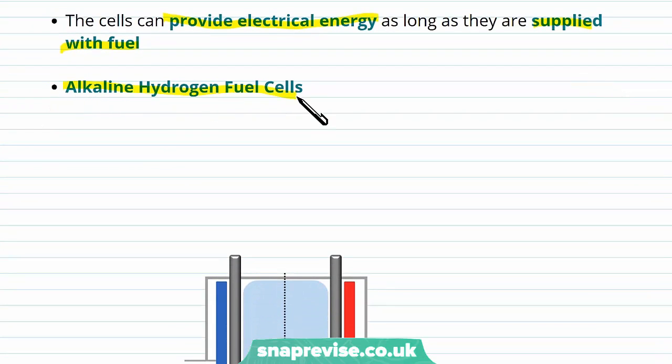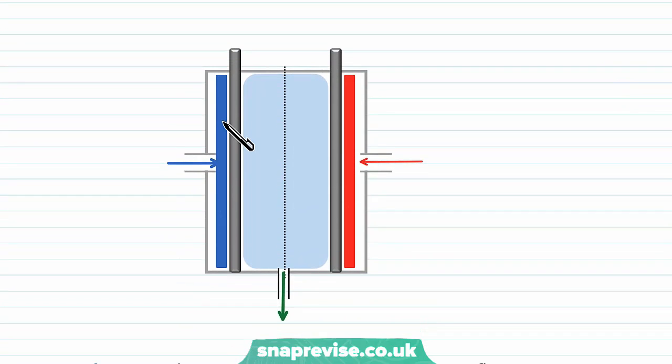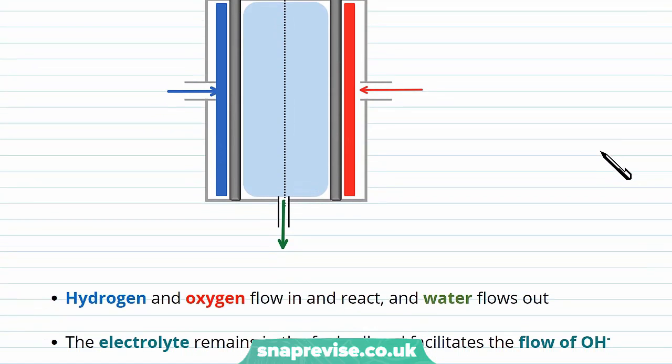Alkaline hydrogen fuel cells are one particular type of hydrogen fuel cell. They look something like this, and we'll continue to add to this diagram as we explain what's going on.